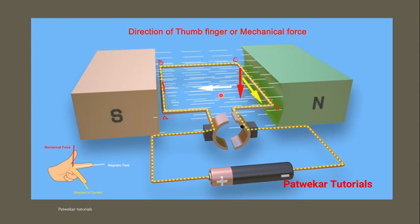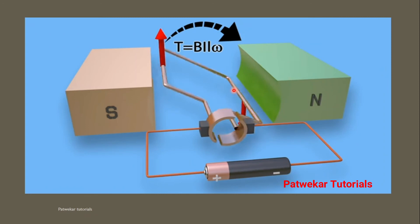As soon as both sides get their respective forces, my coil starts to move and rotate — because it has received both an upward and a downward force. So my coil starts moving because of these two forces.